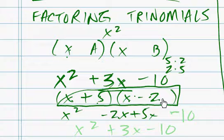And x times negative 2, x times negative 2 is -2x, so 5 times negative 2 is negative 10. And we add, or simplify all of this, and we get x² + 3x - 10. So this is the answer right here, x + 5, x - 2.